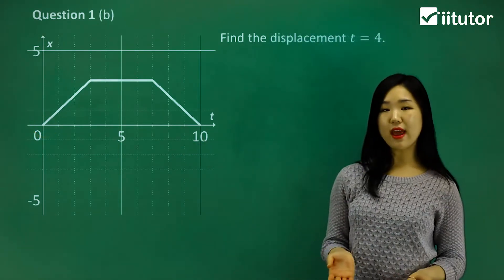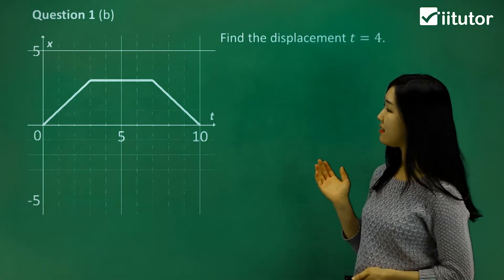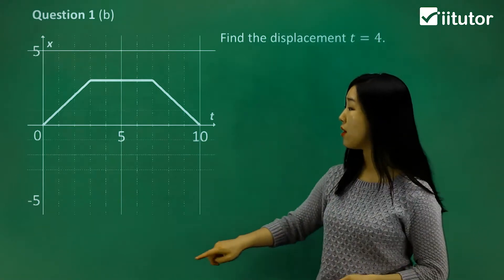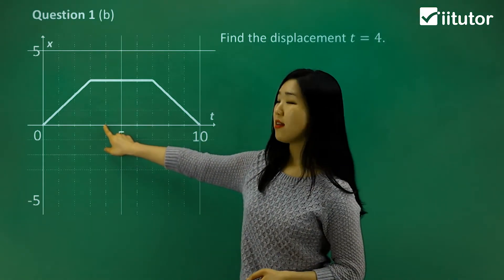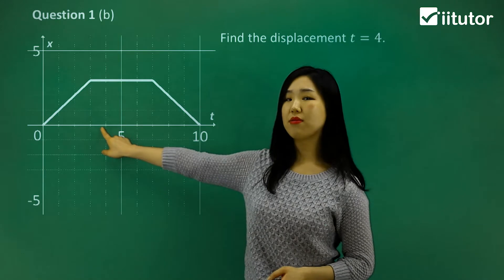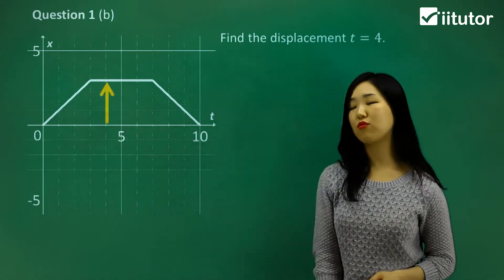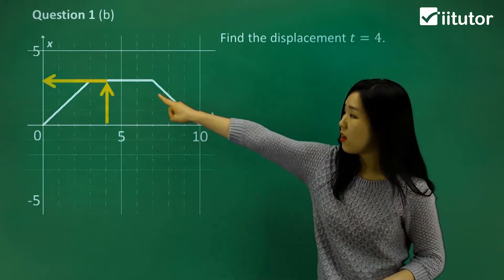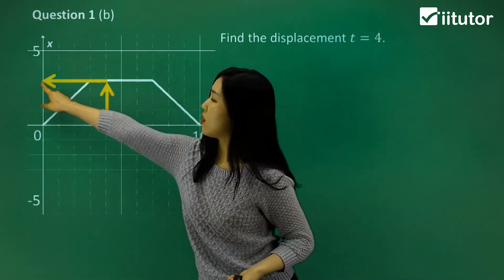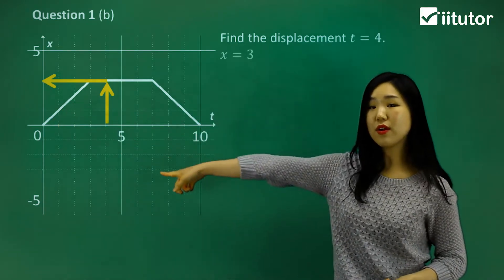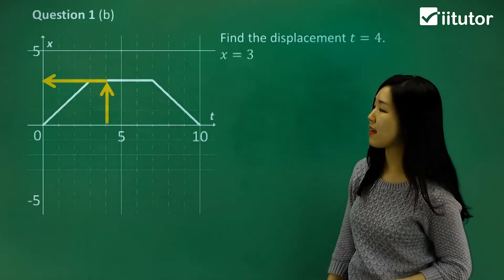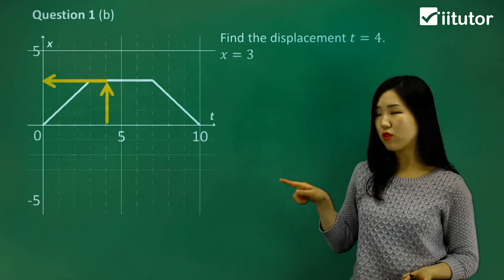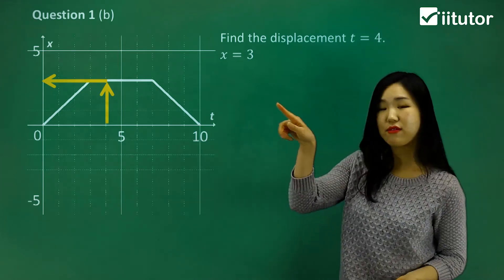Next, it's asking for the displacement at t equals 4, at time 4. Now 4 is right there. The displacement is right there where it's actually equal to the displacement. You can have a look at the arrow where it points to — it's probably around x equals 3. So that's what the displacement is when time is 4. You can follow the graph like that.